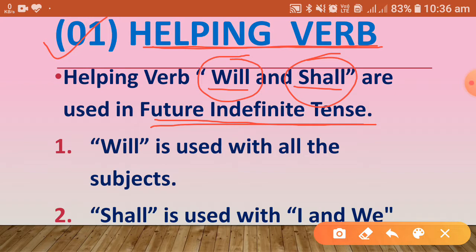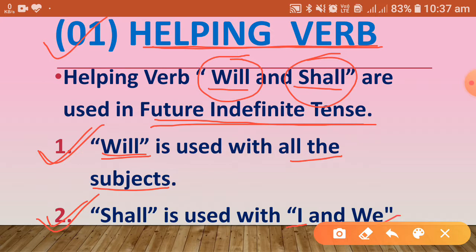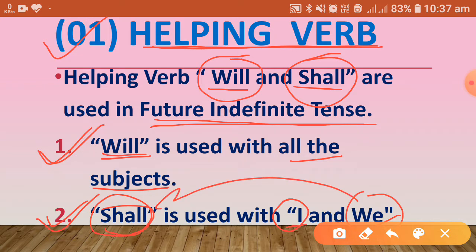Now let us see where to use 'will' and where to use 'shall.' 'Will' is used with all subjects — whether the subject is singular or plural. But 'shall' is used with 'I' and 'we' only. When the subject is 'I' or 'we,' we use 'shall'; otherwise we use 'will' with all other subjects.